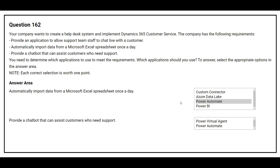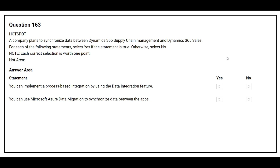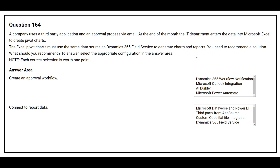For providing a chatbot that can assist customers who need support, the correct answer is Power Virtual Agent. Question 163: A company plans to synchronize data between Dynamics 365 Supply Chain Management and Dynamics 365 Sales. The first statement: you can implement a process-based integration by using the data integration feature — the correct answer is Yes. The second statement: you can use Microsoft Azure data migration to synchronize data between the apps — the correct answer is No.